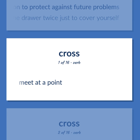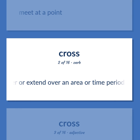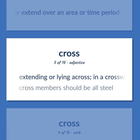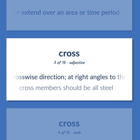Cross (adjective/verb): Meet at a point. To cover or extend over an area or time period. Extending or lying across, in a crosswise direction, at right angles to the long axis — cross members should be all steel.